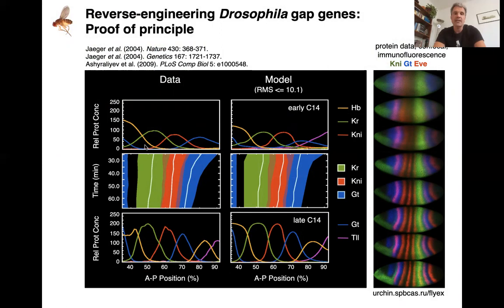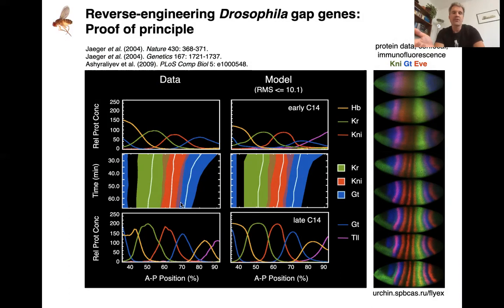When the fit no longer improves we stop, and we got models that fit the data quite precisely. I'm now showing only the middle part of the embryo. You have the gap genes — hunchback, krüppel in green, knirps in red, giant in blue — at early blastoderm stage and about an hour later at the late stage. What happens in between is interesting: in this spatiotemporal diagram where time flows downwards, you can see the peaks of the gap domains are moving to the interior and the domains are getting narrower.